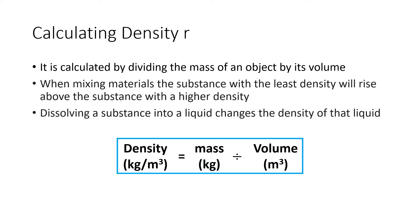It is possible to show that concept in a mathematical equation. Density is equal to mass divided by volume. So if you get the mass of an object measured in kilograms, divided by the volume of the object in metres cubed, you would then be calculating the density of the object in kilograms per metres cubed.